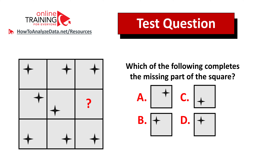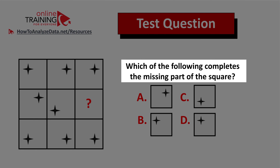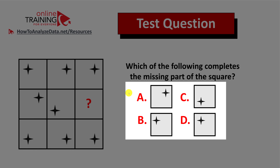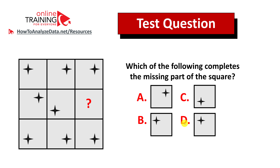Let me share a tricky question from the test — somehow I have confidence that you might figure out the answer. Which of the following completes the missing part of the square? You have a three by three square consisting of smaller squares. Each small square has a star, and all stars are in different corners. One small square is missing, and you have four different choices: A, B, C, and D. Each choice has a star in a different corner. Give yourself 10 to 20 seconds to see if you can come up with the answer.